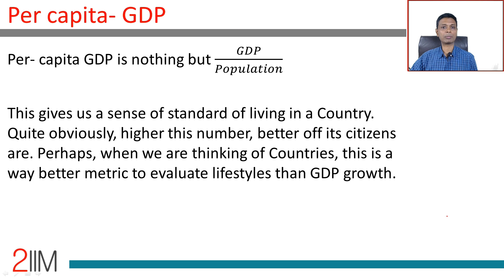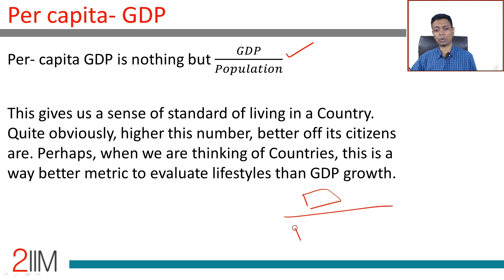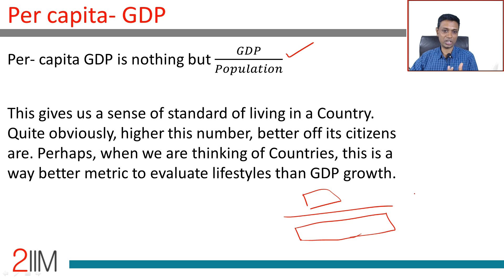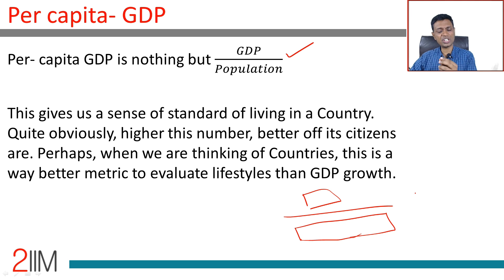Per capita GDP is simply GDP divided by population — no rocket science. It is the truest proxy for lifestyle. A country can have a large GDP, but if it has a gigantic population, it may actually be a poor country. India ranks high in GDP numbers but is not a developed nation because our population is so high — our per capita GDP, our lifestyle proxy, is poor. Per capita GDP gives a good sense of how affluent each person in a country is on average.